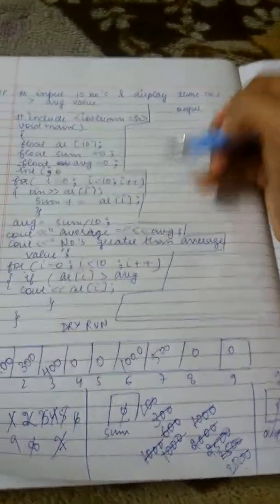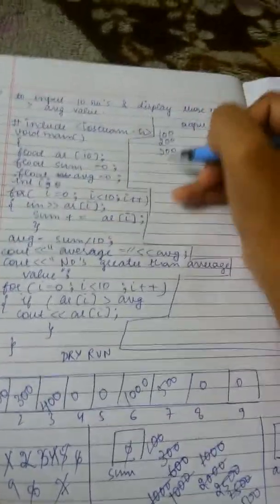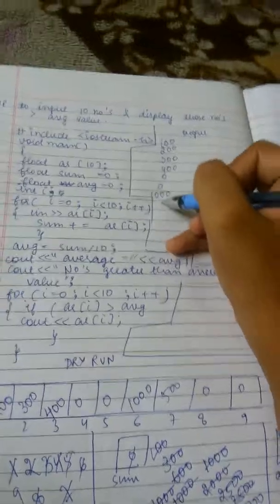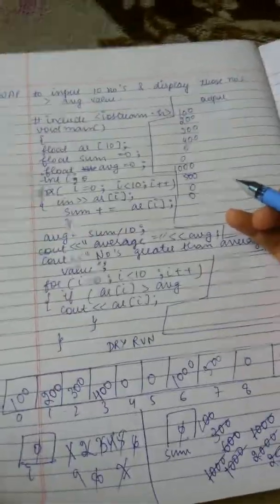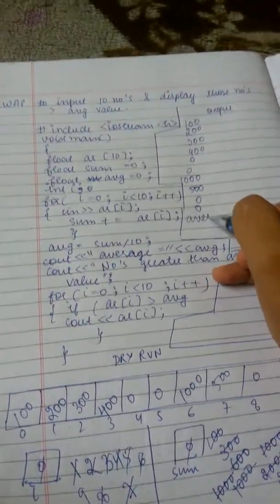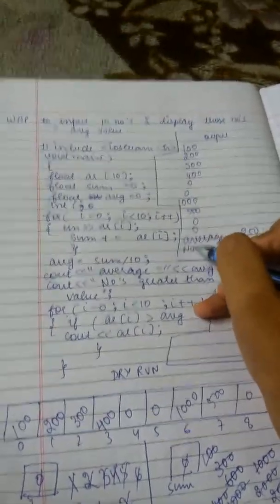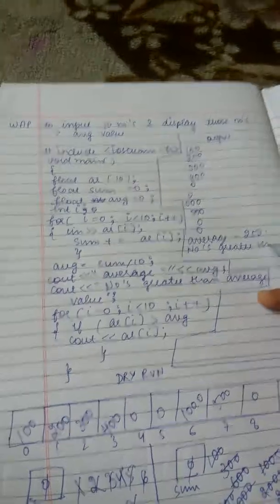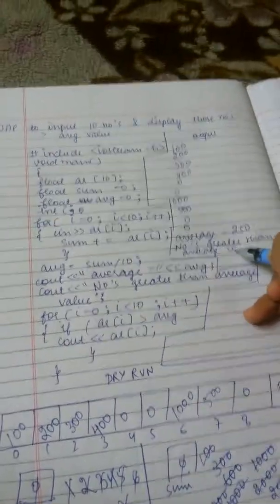Now we have entered some numbers that are 100, 200, 300, 400, 0, 0, 1000, 500, 0, 0. Now we will see the value of average. Average is equal to 250. Now, numbers greater than average value are: